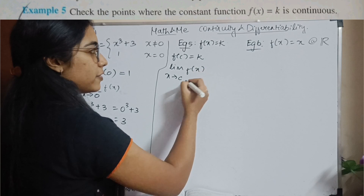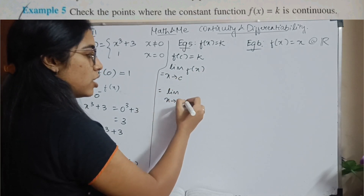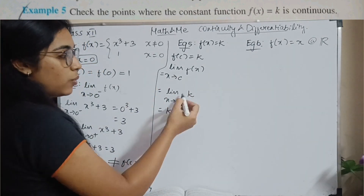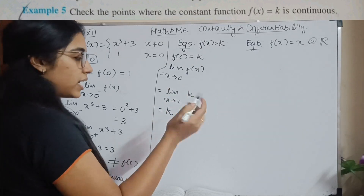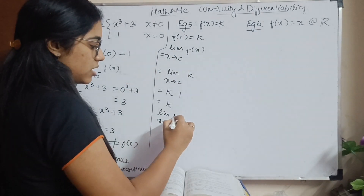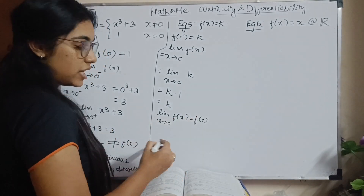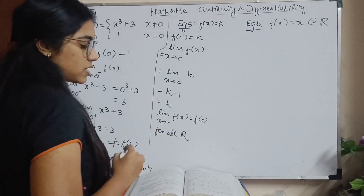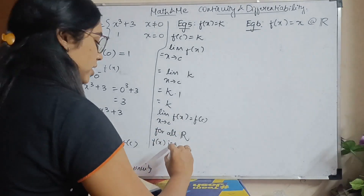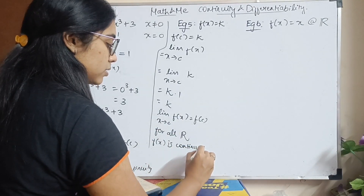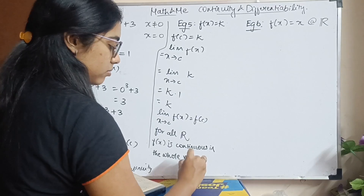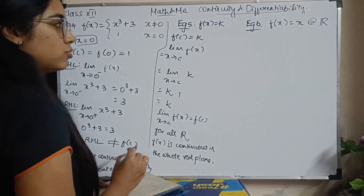Now find the limit: limit as x tends to c of f(x) = limit as x tends to c of k. Since k is not dependent on x, take k outside the limit. What remains is limit of 1, which is 1. So the result is k × 1 = k. Therefore limit equals f(c) for all real numbers, and f(x) is continuous in the whole real plane.